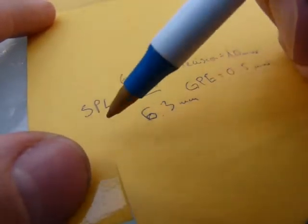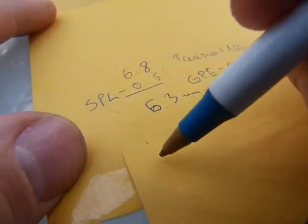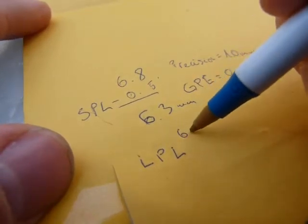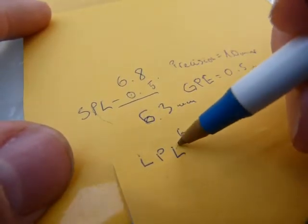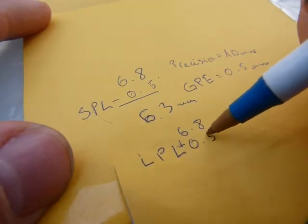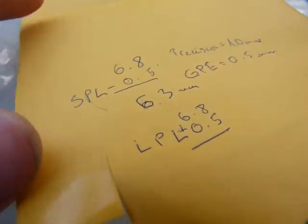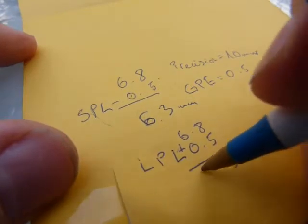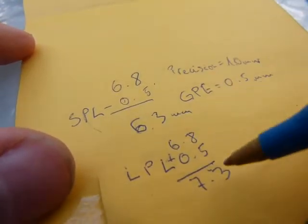And the longest possible length of this object, and I'm going to go LPL, longest possible length, is the measurement taken plus the precision of the instrument. And there, 8 plus 5 is 13, and there, 7.3 mm.